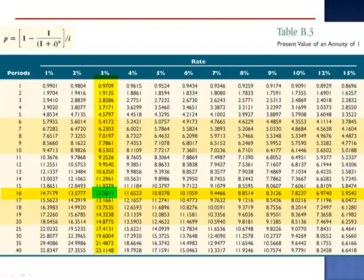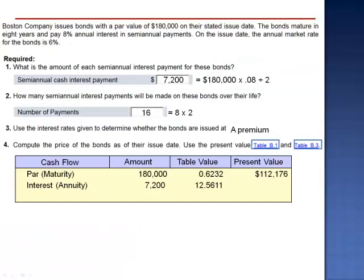This is the number of equivalent payments. Even though there will be 16 payments of $7,200 spread out over 8 years, it's the equivalent of 12.5611 payments of $7,200 in today's purchasing power. $7,200 multiplied by 12.5611 is $90,440.